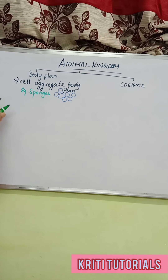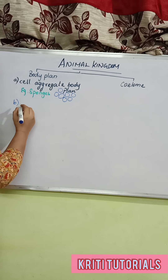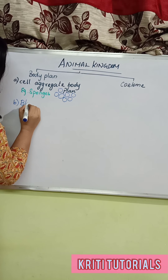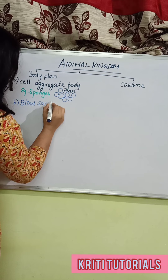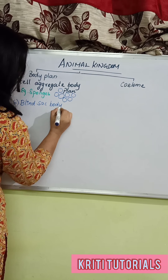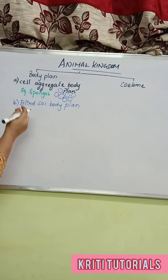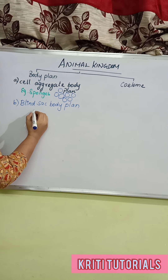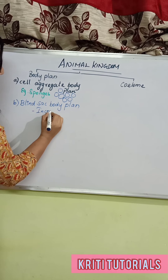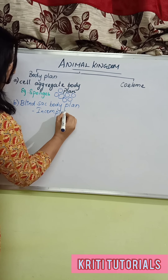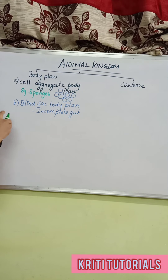The second type is the blind sac body plan. In the blind sac body plan, there is the presence of an incomplete gut. The digestive system is not very well developed.